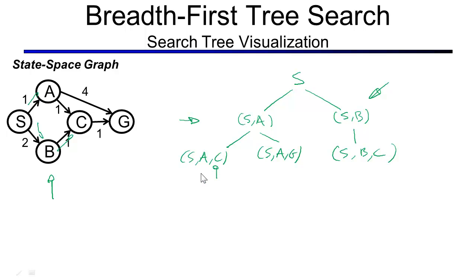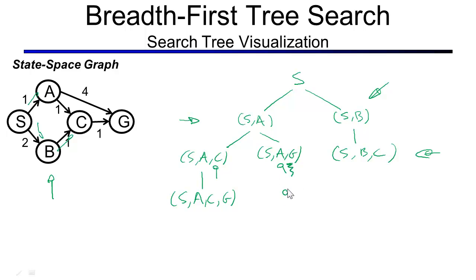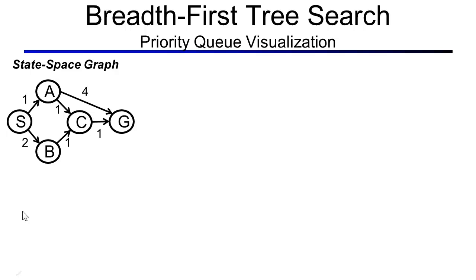Performing alphabetical tie-breaking, S, A, C is next. Expanding it, C has one successor G, giving S, A, C, G. Now the two shallowest nodes are S, A, G and S, A, C, G. Alphabetical tie-breaking tells us to go with S, A, G next. When we ask for expansion of S, A, G, we notice the last state is the goal state, so we declare success. The path we return is S, A, G.